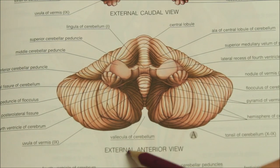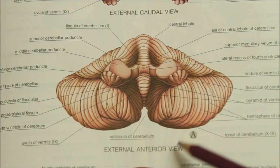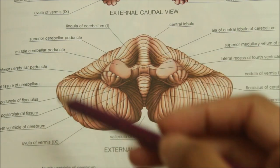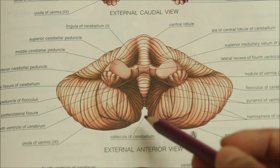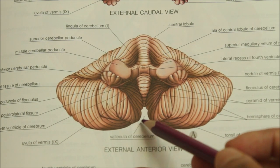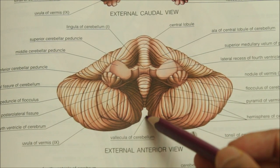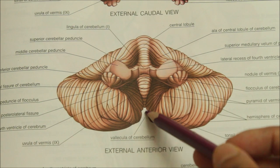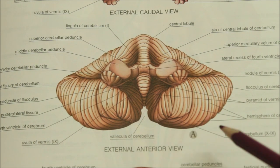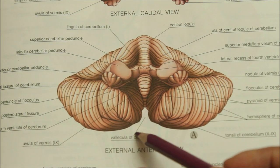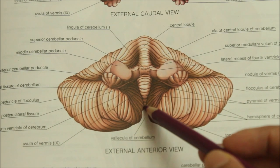This is an external anterior view of the cerebellum where you can see the vallecula more clearly — this notch right here is the vallecula.